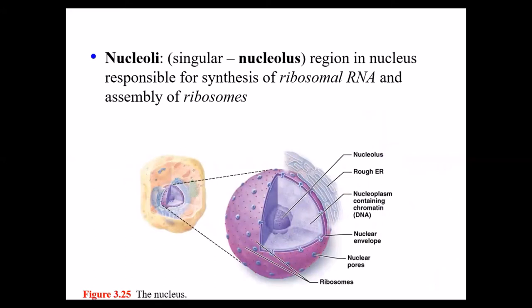The nucleolus, found inside of the nucleus, is where a type of RNA called ribosomal RNA is produced. Ribosomal RNA is necessary to make the ribosomes. That is the function of the nucleolus found inside of the nucleus.